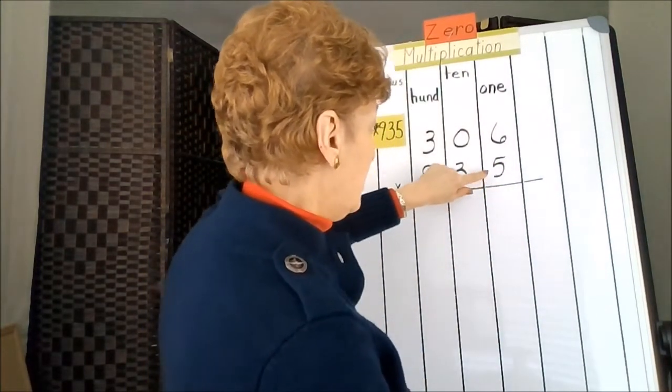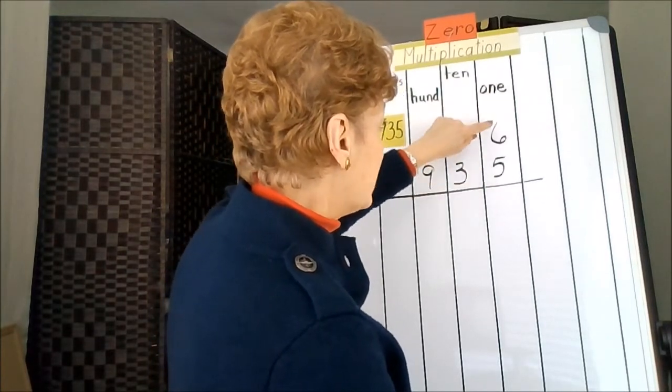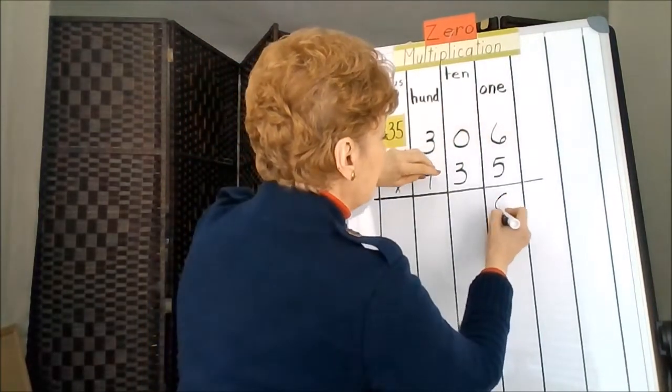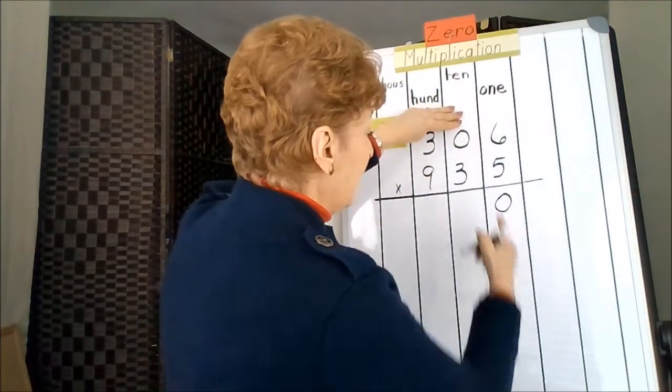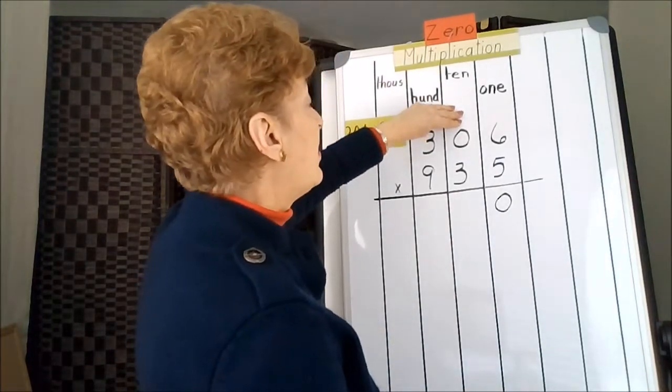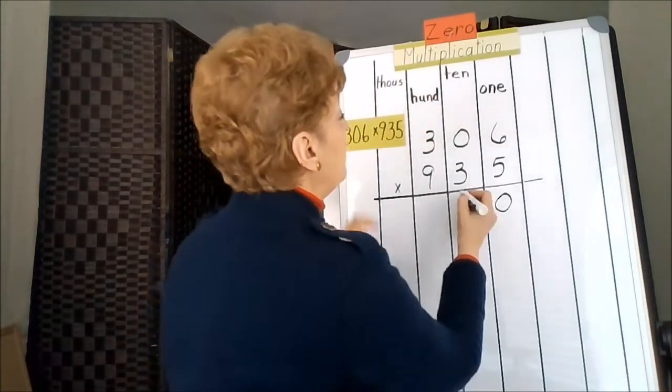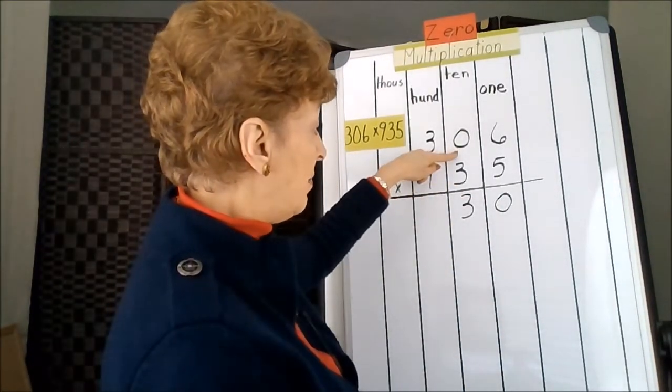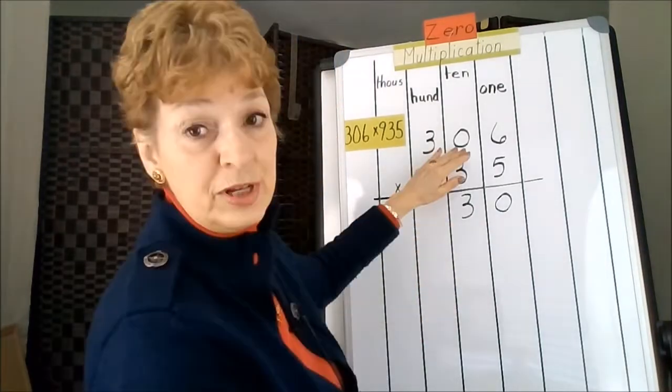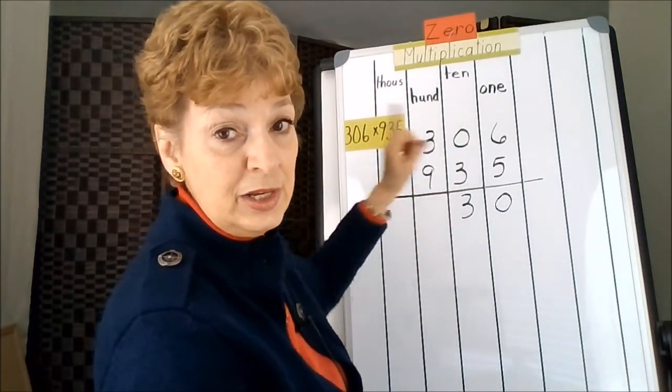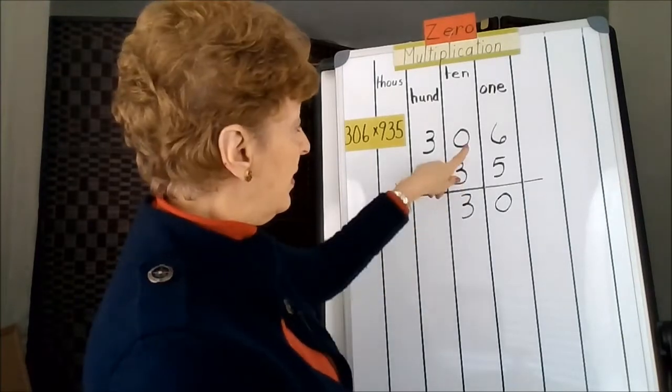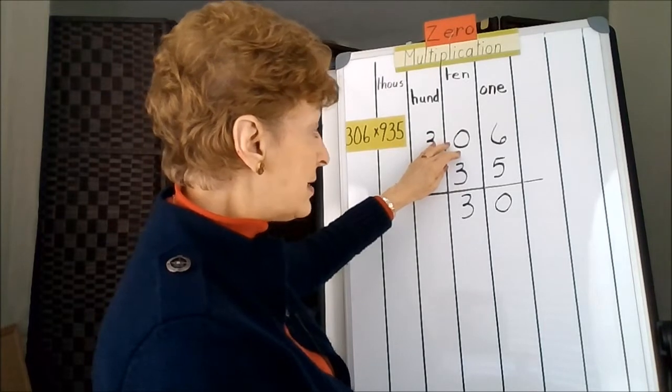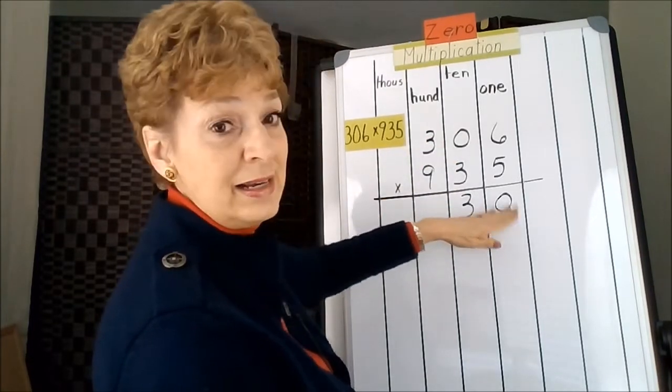When I go to multiply 5 times 6, I get 30. Normally, I would put down my 0, carry my 3, say 5 times 0 is nothing, and I carry 3, so I have to put the 3 down. That's a lot of thinking. When there's a 0 in the middle, you can just say 30. You can take advantage of this trick. The carrying kind of disappears because anything times 0 is 0, so whatever you're carrying can just be put down.